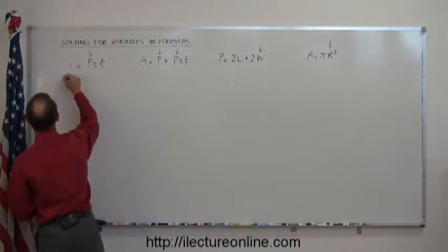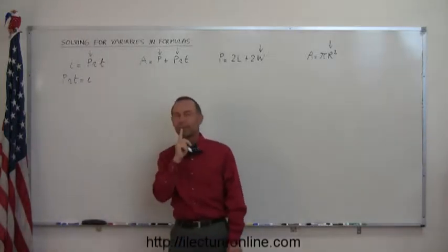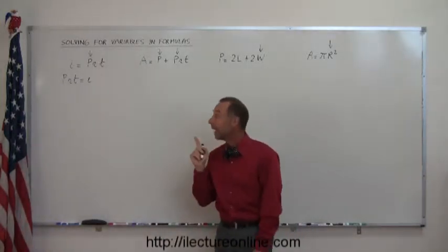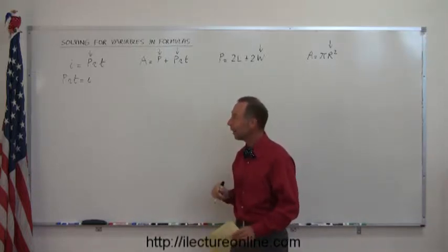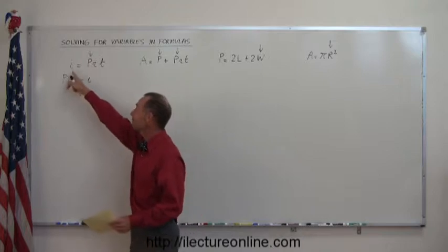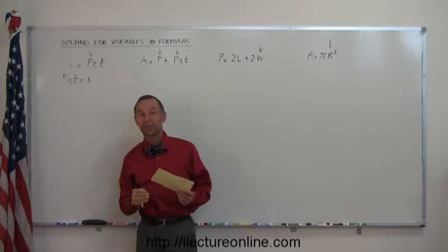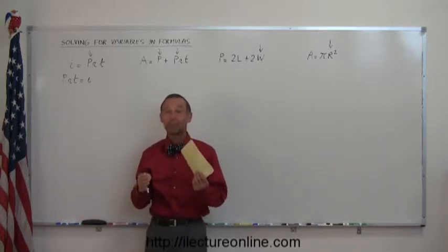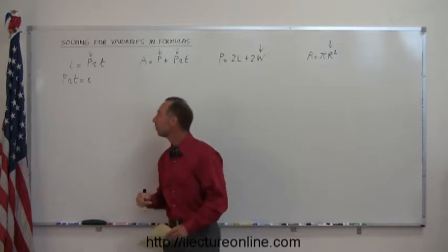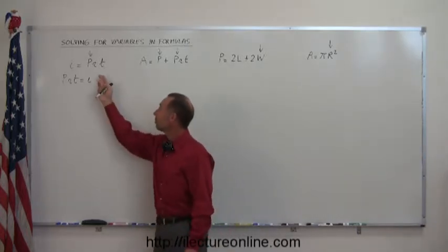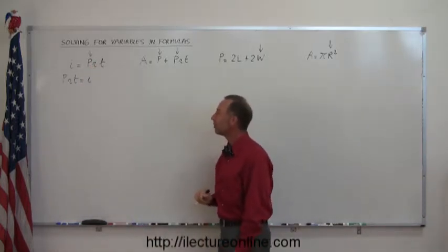So we have prt equals i. Now, you might say: didn't you tell me that if I put something on the other side of the equals sign, you have to change the sign? And that is indeed correct. Technically, if we put the i on the right side it becomes minus i, and prt on the left becomes minus prt. But if you multiply both sides by negative one, they become positive again. So we just do that in one swoop — simply move this to the left, move that to the right, and things are good. It's like turning the equation around.